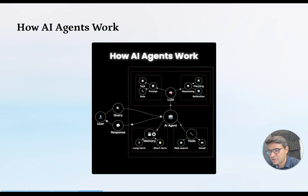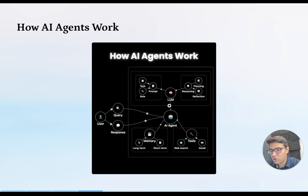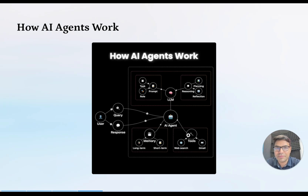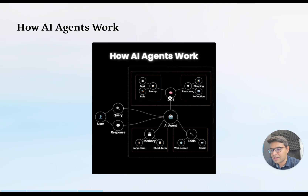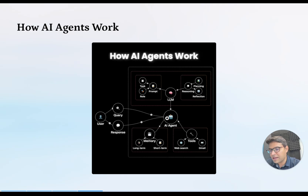Once the AI agent gets the output from the large language model — say, a drafted email — it sends that email to tools like Gmail, Outlook, or Zoho, which actually perform the task of sending the email to Aditya. So you sent a query, the AI agent utilized a large language model to draft the email, and then utilized a tool like Gmail to send it. During this entire process, all information — generating the email content, sending it — is stored in memory. Once the task is completed, the AI agent informs you: 'I've drafted this email and sent it to Aditya.'